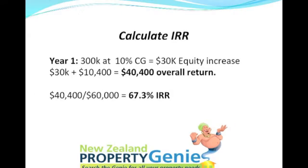Let's calculate the internal rate of return on our initial investment of $60,000. The overall return of $40,400 divided by the cash we put into the deal — $60,000 as a deposit — gives a return of 67.3% internal rate of return. That's the true return on your money, including the cash and the capital growth: 67.3% IRR for the first year.